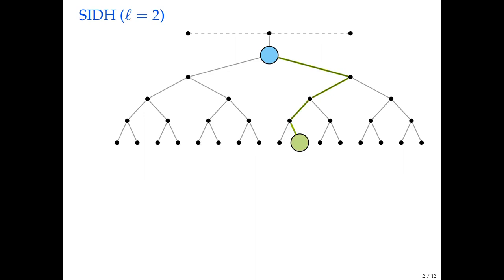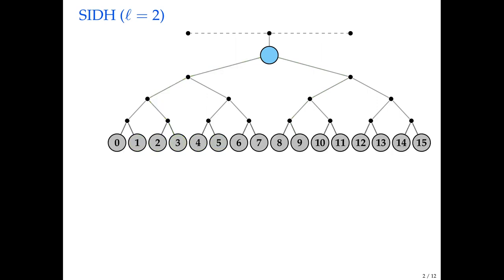So what does SIDH do? An SIDH public key computation now starts at this blue node, and then it takes a random walk through the graph. So it takes here four green steps landing on this green node. Here the green node would be the public key, and this walk, this random walk would be the secret key. Another example of a walk would be the following ending up on a different public key.